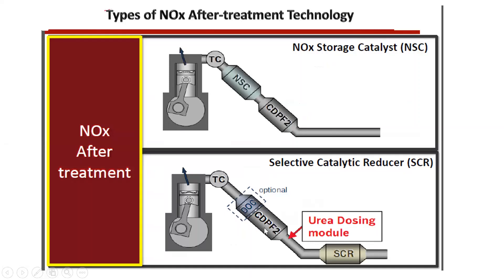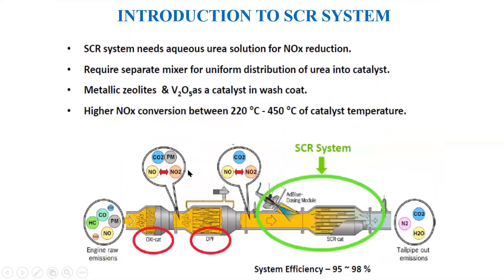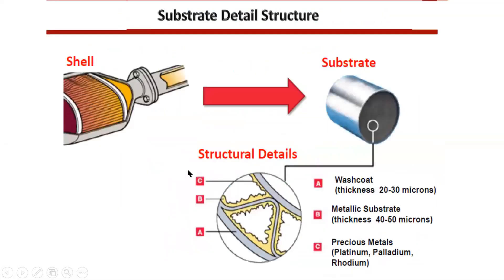In the SCR system, we have DOC, DPF, or CDPF — which is nothing but a coated DPF — but you can get the temperature up to 600 degrees Celsius, and you have the SCR catalyst.